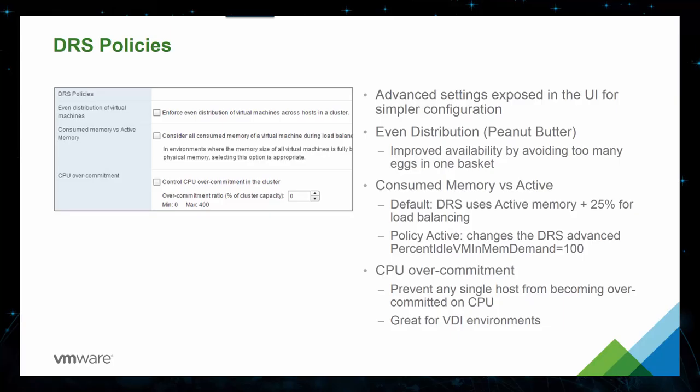We've also updated the Distributed Resource Scheduler, DRS, policies, which offer a simpler configuration with three options. The first is even distribution, providing improved availability by avoiding too many VMs on a single host. The second is Consumed Memory is Active, which is the default setting where DRS uses active memory plus 25% for load balancing, and changes the DRS advanced percent idle VM in demand to equal 100. The third option is CPU overcommitment, which prevents any single host from becoming overcommitted on CPU — great for VDI environments especially.